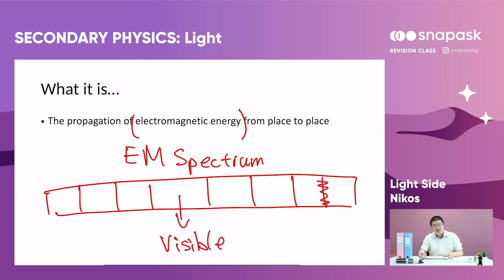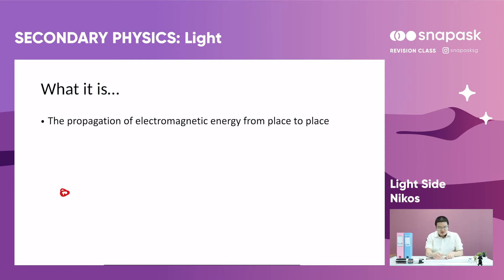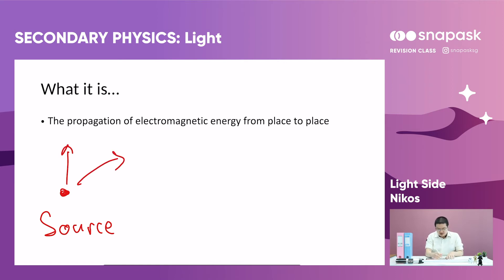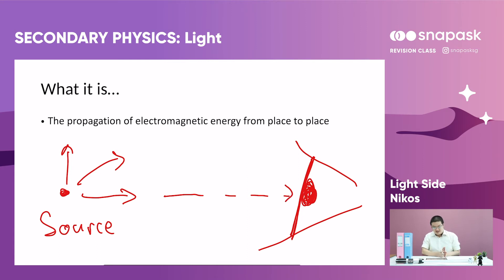There are actually seven regions in the electromagnetic spectrum. All of this is very simply a propagation of energy from place to place. So what do I mean by propagation? You have a source of energy — this could be a light bulb — and it irradiates energy in all directions. Then you would usually have an observer, so let's make this a giant eye. This is where you would see the radiation propagating. In short, light is just a movement of energy from point to point.